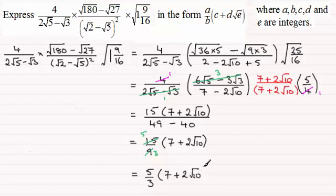And that is in this form. If we're asked to find out what a, b, c, d, and e are: a would be 5, b would be 3, c would be 7, d the 2, and e 10.